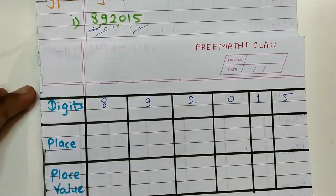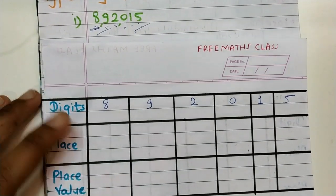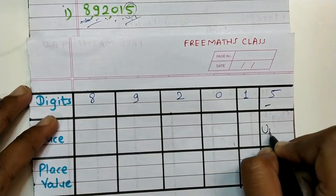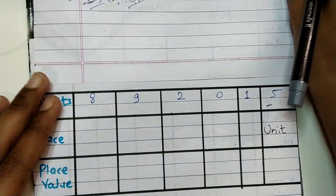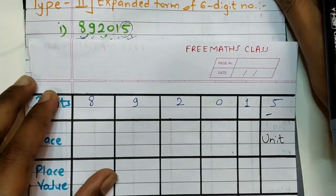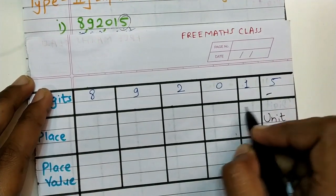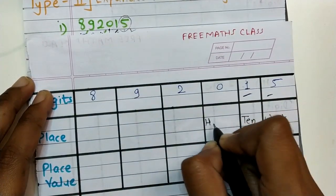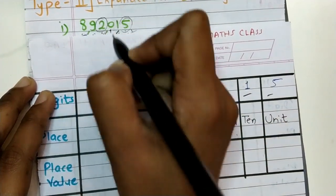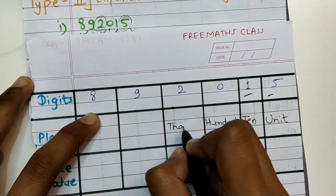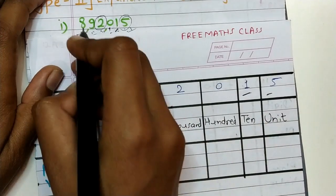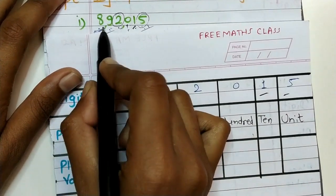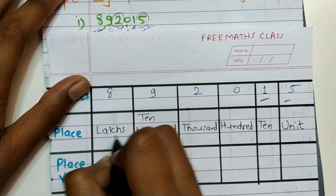Now we write the places going from right to left. Place of five is unit place. Place of one is tens place. Place of zero is hundreds place. Place of two is thousands place. Place of nine is ten thousands. And lastly place of eight is lakhs.